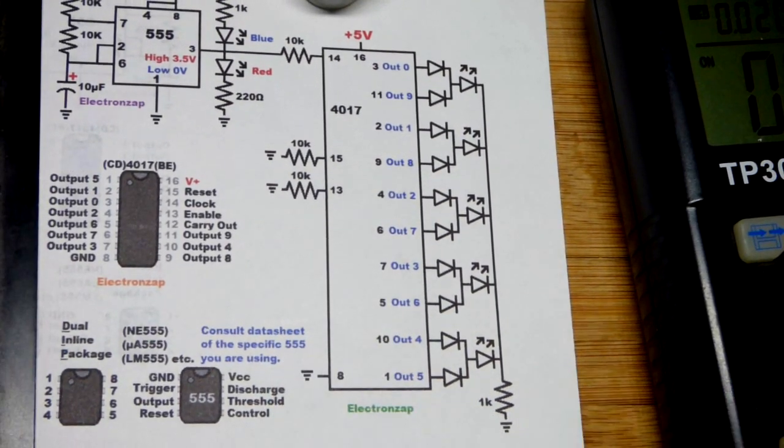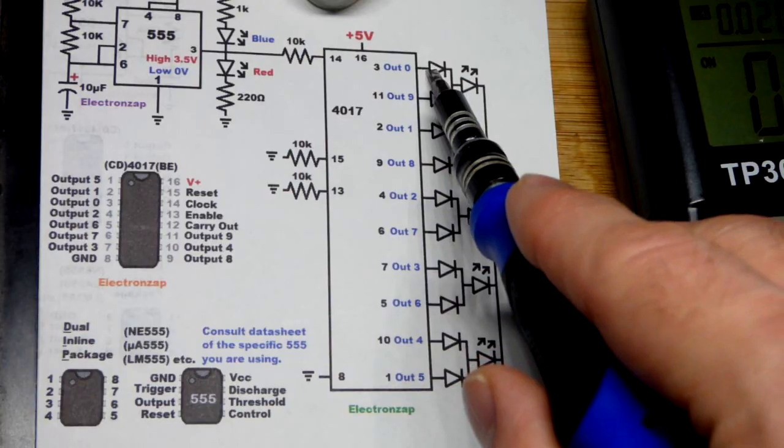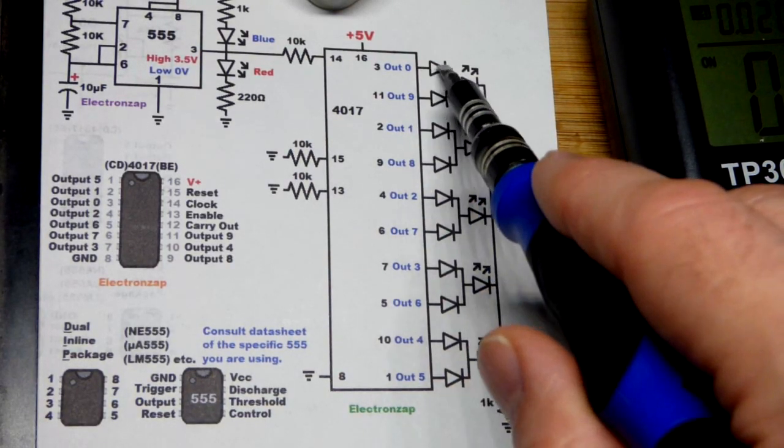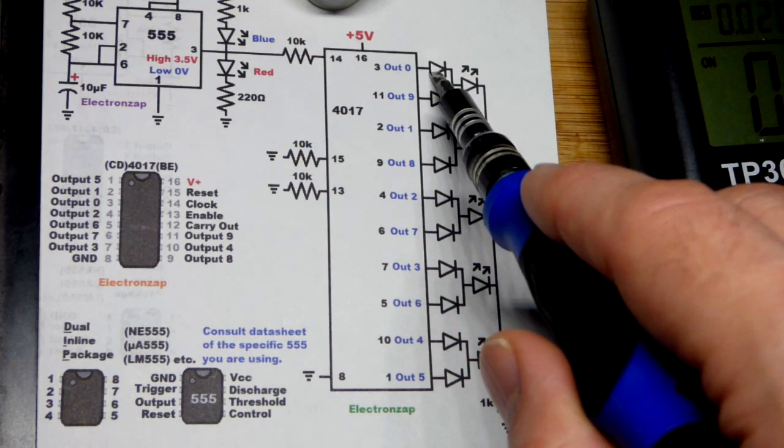So we have output zero right there, and when it's high it would pump current into nine. So we have diodes for all outputs here.